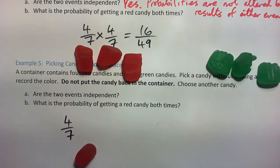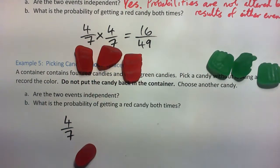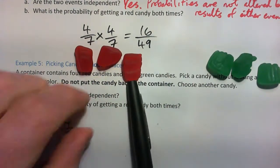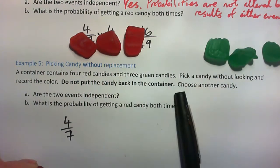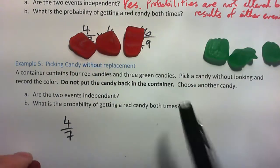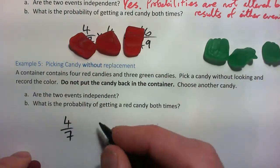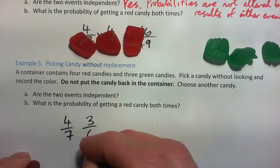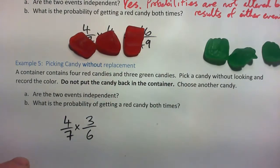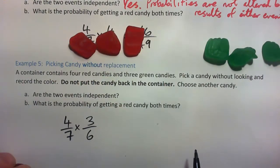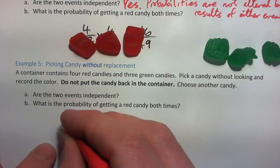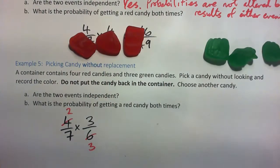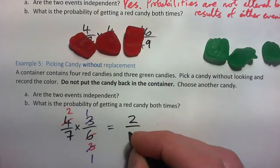Imagine we picked a red. What's the probability of getting a red candy on the next turn? Remember, this time we did not put the candy back in the container. So if we got a red one and didn't put it back, the probability of getting a red next time is three out of six. So that's the probability of getting a red candy both times — four-sevenths times three-sixths. If we simplify: two into two goes twice, two into six goes three times, three into three goes once — giving us two over seven.